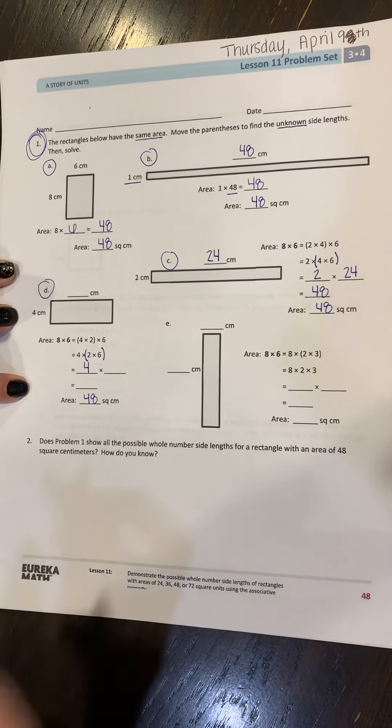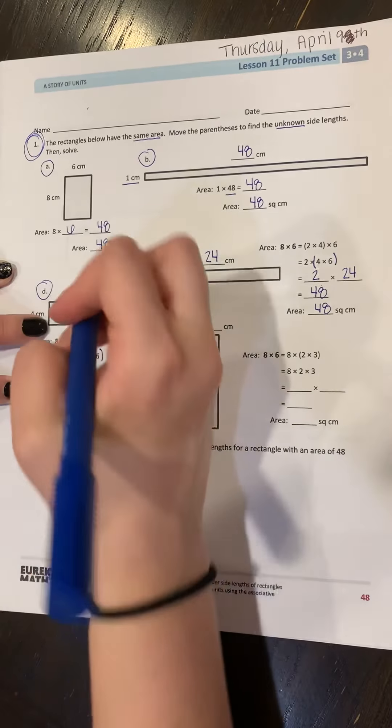So I'm not multiplying four times anything else yet. I'm just dropping it down. So now I can do six times two, which is 12.